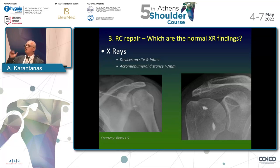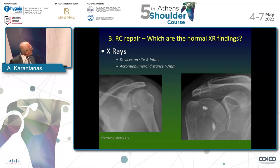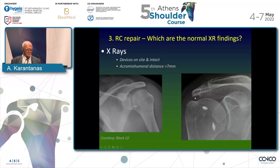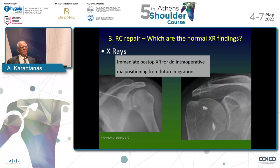Regarding the plain films, what we have to look at first is the distance between the humeral head and the acromion. This has to be at least seven millimeters, and then the devices have to be on site. For instance, this anchor was used for fixating the subscapularis tendon. We need to have on the desk an X-ray taken after the operation so we can discriminate malpositioning from future migration of the devices.